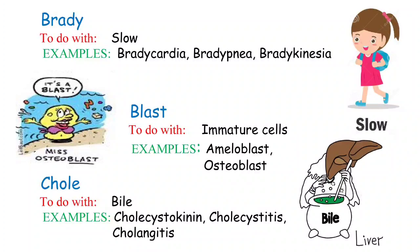The next term is 'blast,' referring to immature cells, also known as precursor cells or stem cells. These immature cells give rise to all kinds of different specialized cells. Examples include ameloblast — the precursor cell involved in the formation of tooth enamel, and osteoblast — the immature cell from which bone is formed.